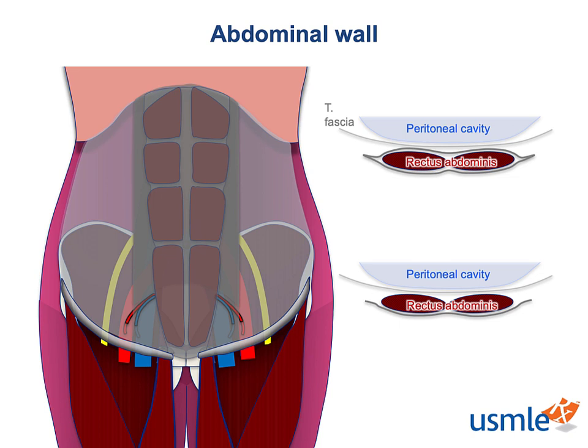The inferior epigastric vessels also have another important anatomical relationship, which we'll get to in a moment. The three lateral muscles of the abdomen — the transversus abdominis, internal oblique, and external oblique from inside to outside — are strongly associated with both the rectus abdominis muscle and the inguinal ligament. More than that, they help form the inguinal canal. The short version is: because the testes start in the abdomen and then move out to the scrotum in fetal development, they end up punching holes in a lot of the lateral abdominal musculature and fascia on their way out — holes that are very relevant to the surgical anatomy of inguinal hernia repairs.